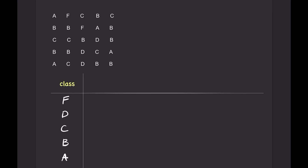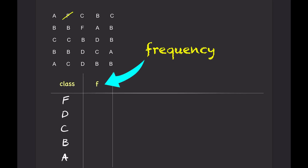Now we will count how many data points fall into each class. For the first class, F, there are two data points. And for the second class, D, there are three data points.